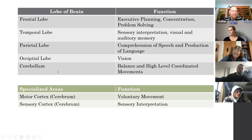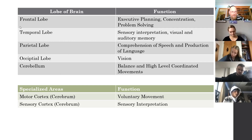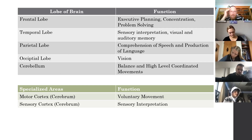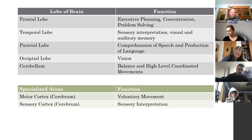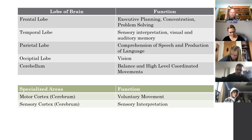We've broken this down lobe by lobe, giving you the function of each major lobe. Frontal lobe: executive planning. Temporal lobe: sensory interpretation, visual and auditory memory. Parietal lobe: where we comprehend speech and produce language. We're going to go over the pre-central and post-central gyri and how they contribute to both motor and sensory function - there are different areas of these gyri that control specific areas of our body in both sensory and motor function.